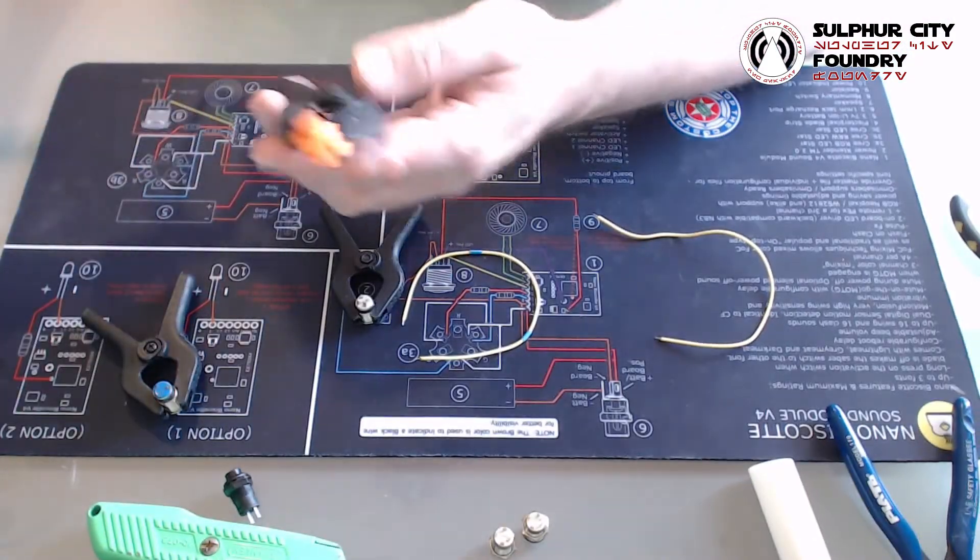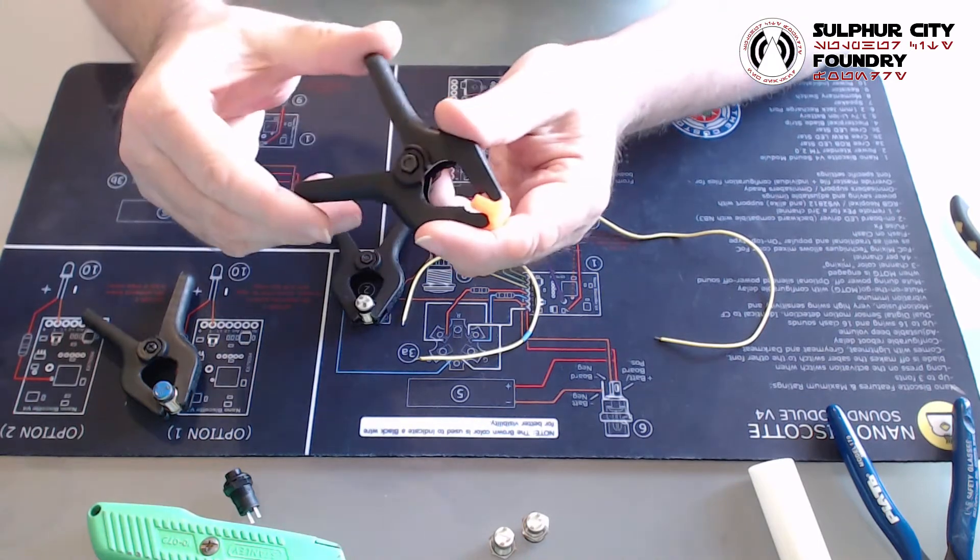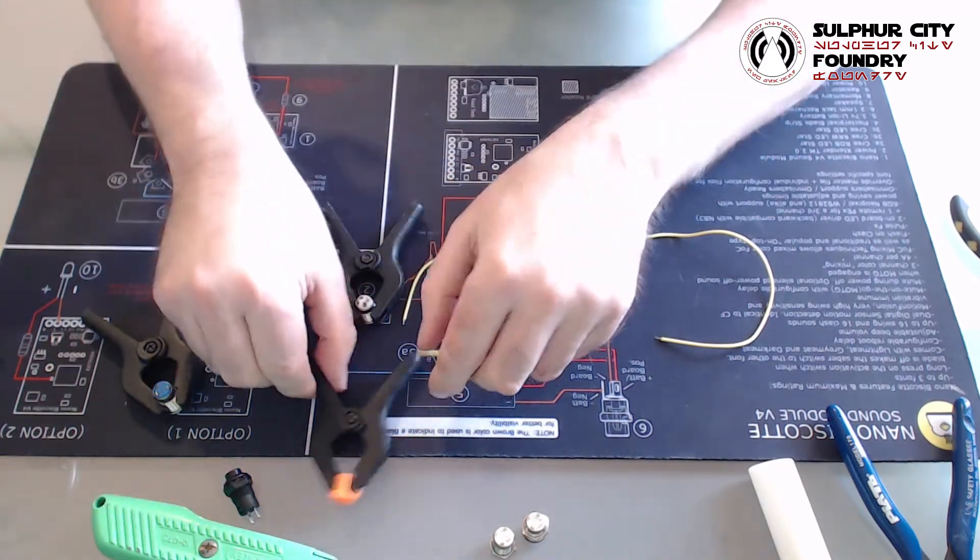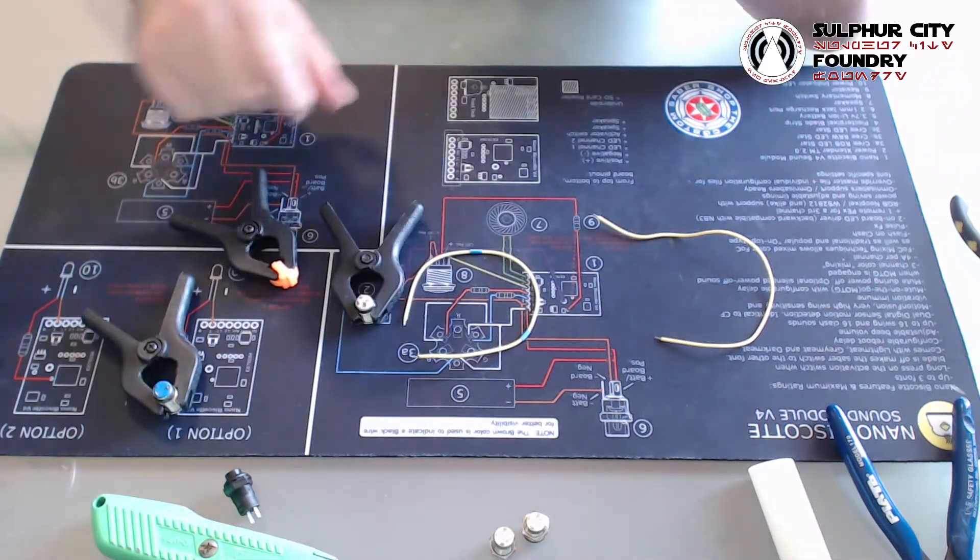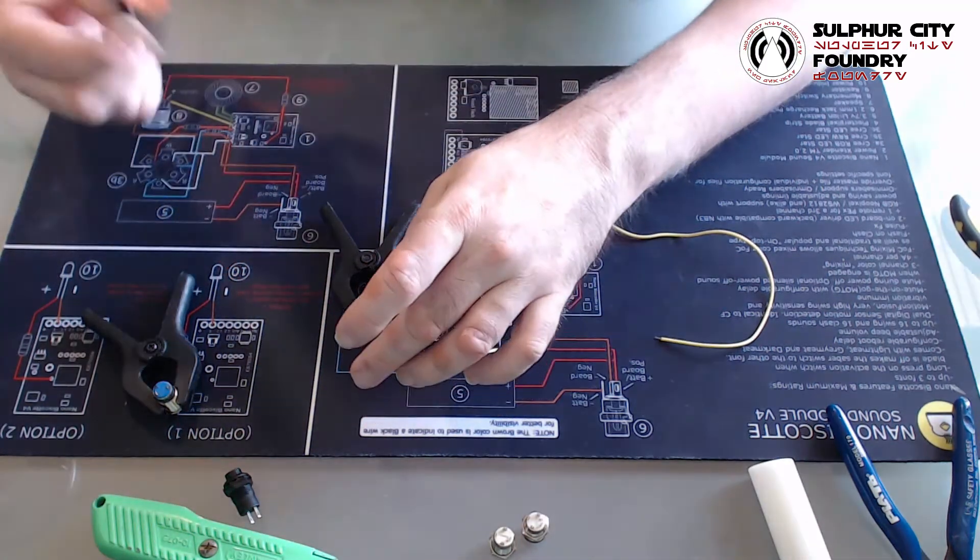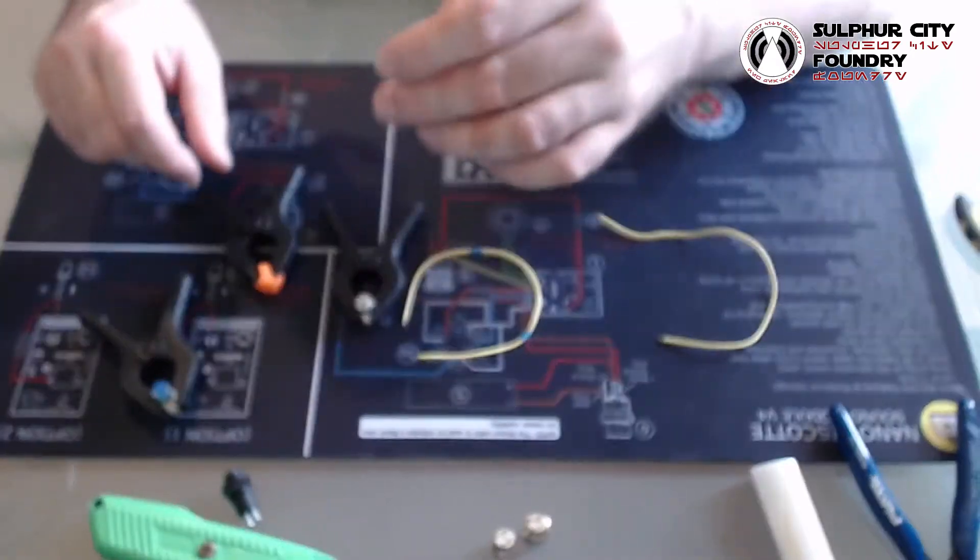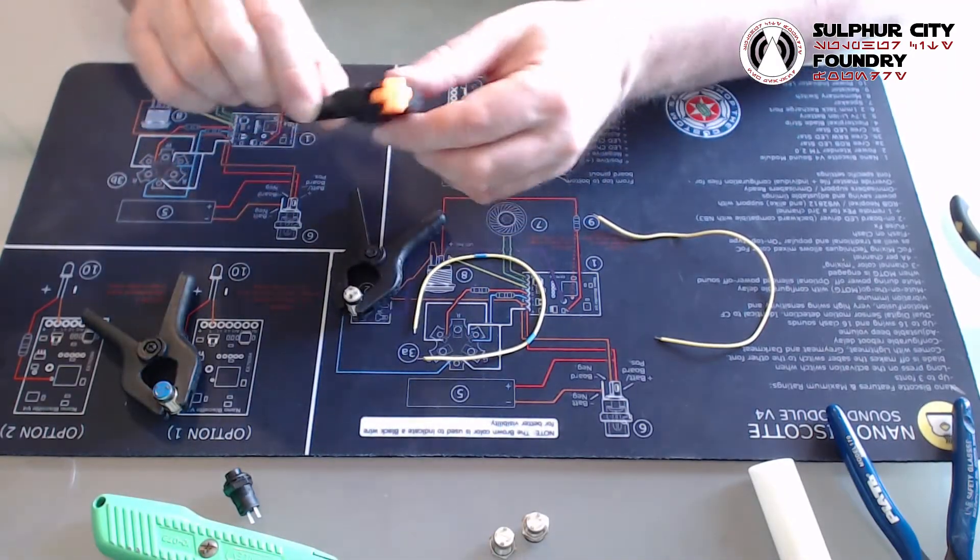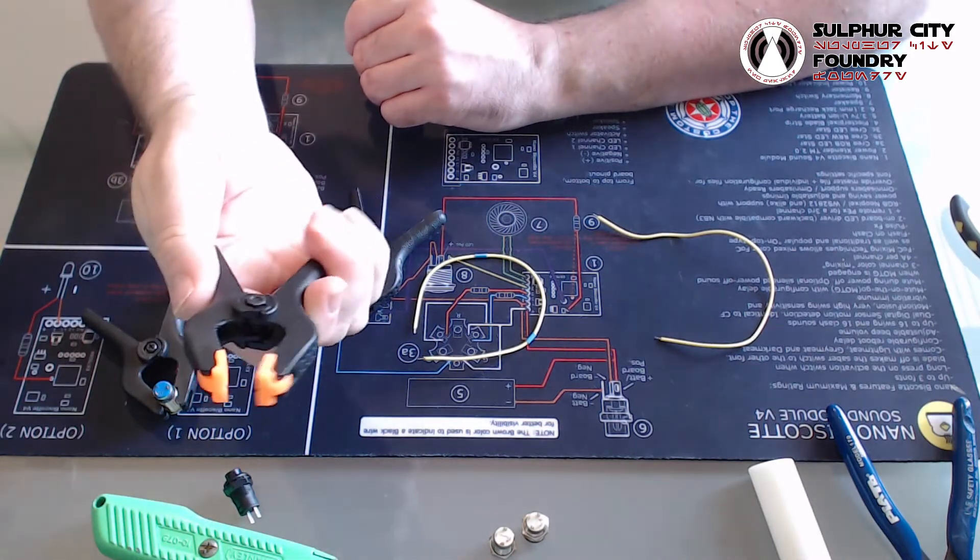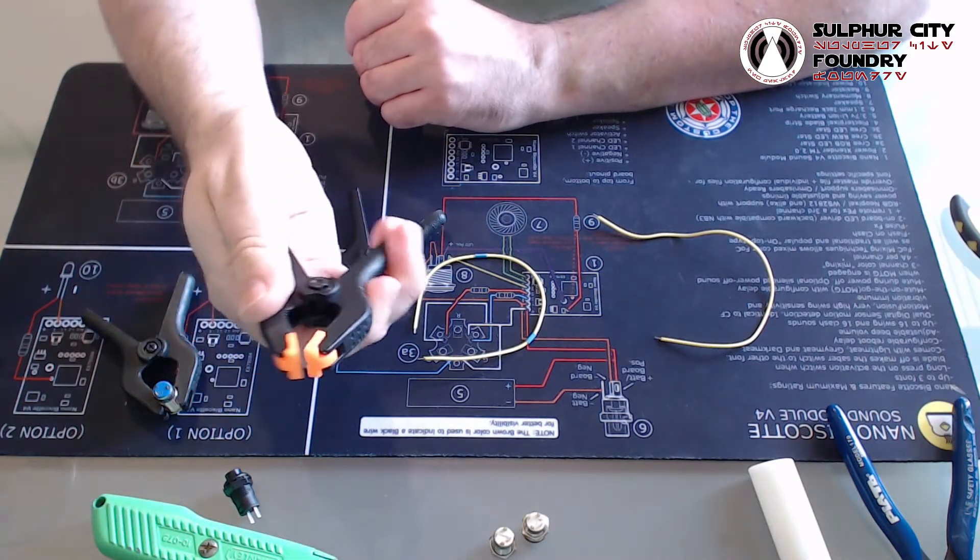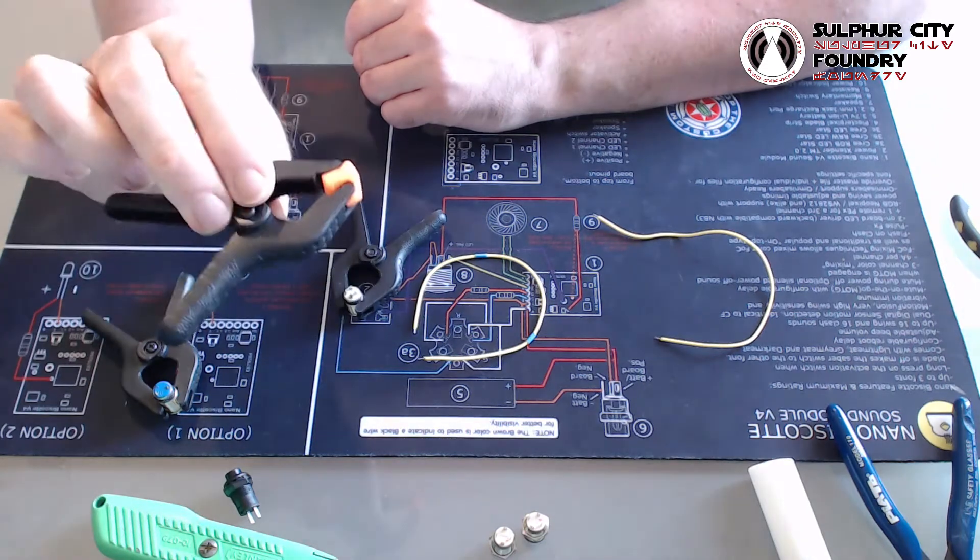First off, quick tip for holding your switches. I covered some tools of the trade in an earlier video. These are some of the tools that we use here in Sulphur City Foundry just to keep things nice and stable when I'm not dropping them on the workbench. You can actually find these at a dollar store. These cost like two New Zealand dollars, which is about a buck fifty US. You can get a pack of three of those for that.